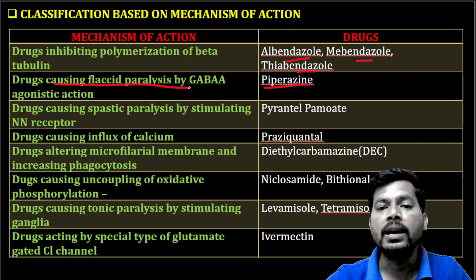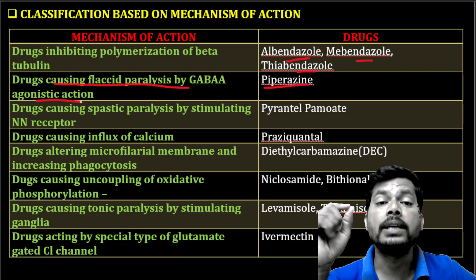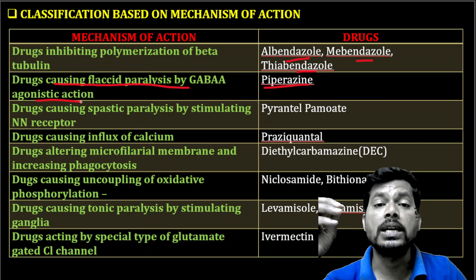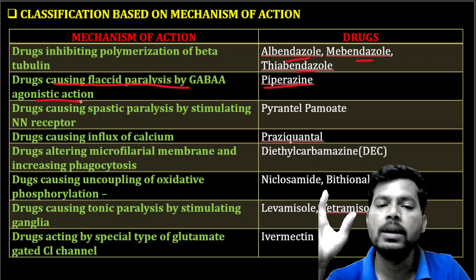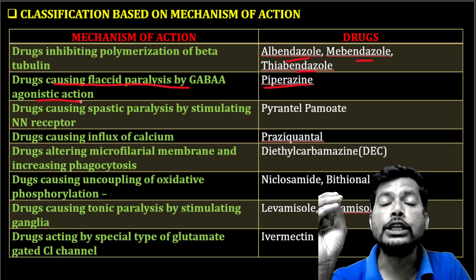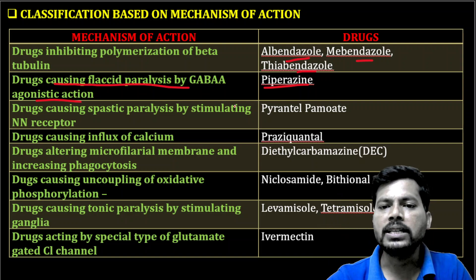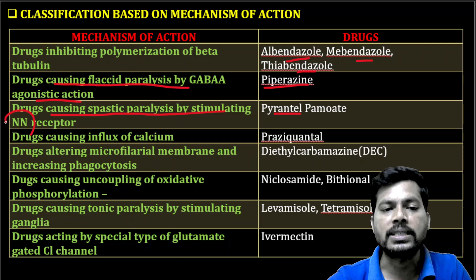Next, piperazine citrate causes flaccid paralysis by GABA agonism. This drug agonizes the GABA receptor in the helminth. GABA is an inhibitory neurotransmitter in the nervous system of the helminth, causing relaxation of the helminth muscle. When the helminth muscle becomes relaxed, it leads to inactivation of the helminth.